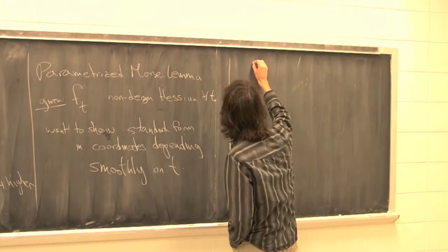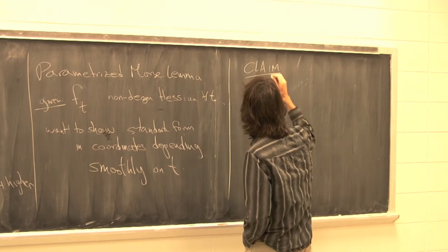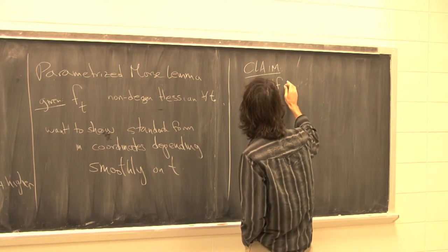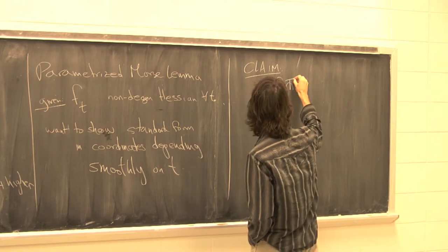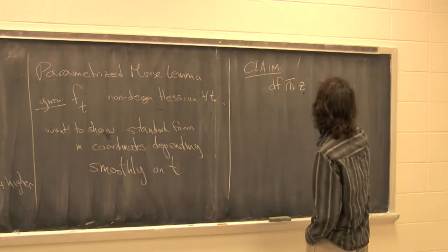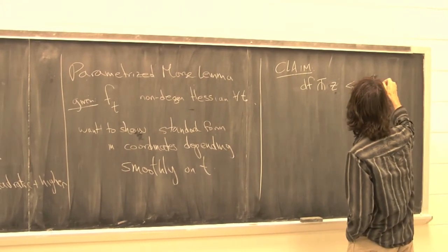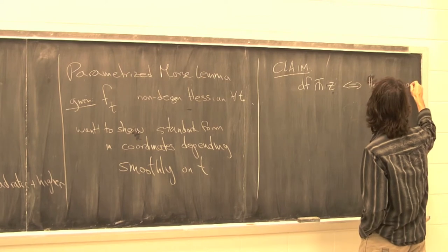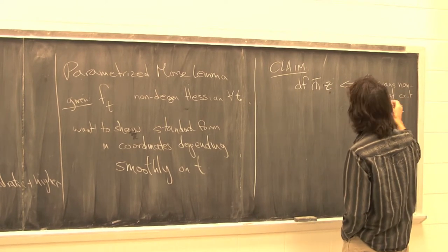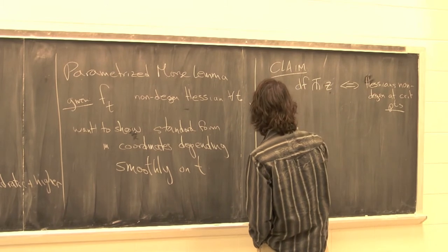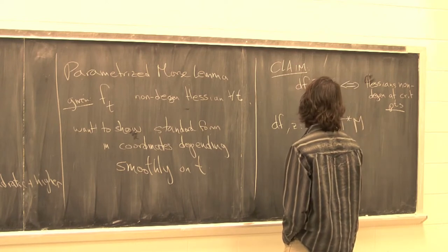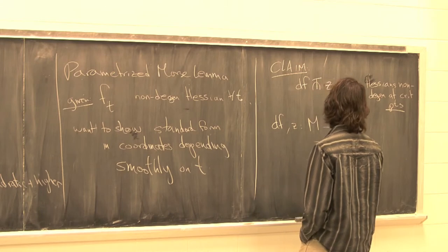So we're trying to show that Df, as a section, is transverse to Z, the zero section of the cotangent bundle. Z and Df are both maps from the manifold M into the cotangent bundle. Z is the one that takes any point P to the zero vector at P.